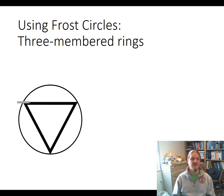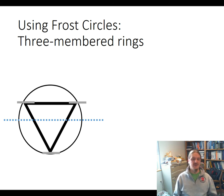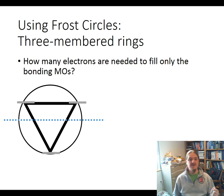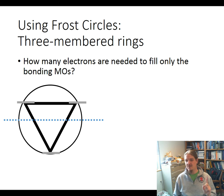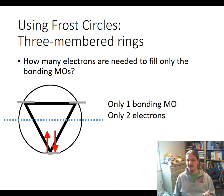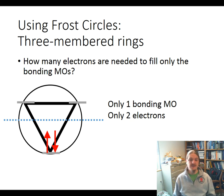Now let's look at the three-membered ring in my triangular frost circle. Instead of drawing a structure and figuring out if it's aromatic, let's ask: how many electrons are needed to fill only the bonding molecular orbitals? Below the dotted line, there is only one bonding molecular orbital, so we only need two electrons to fill it. So a three-membered ring that's cyclic and conjugated, with only two electrons in it, is aromatic.